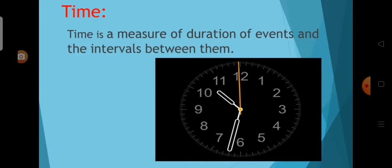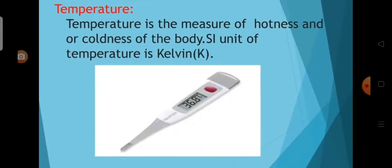Next topic is time. Time is a measure of duration of events and the intervals between them. Temperature is the measure of hotness or coldness of a body. The SI unit of temperature is Kelvin. The other units for measuring temperature are degree Celsius and Fahrenheit.